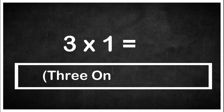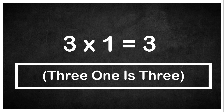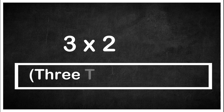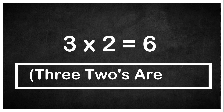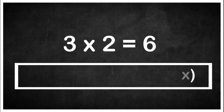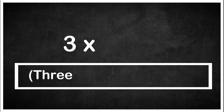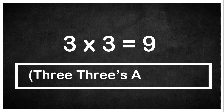Today we will learn about the table of three. Three one is three. Three twos are six. Three threes are nine.